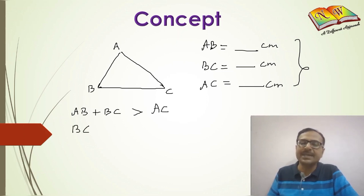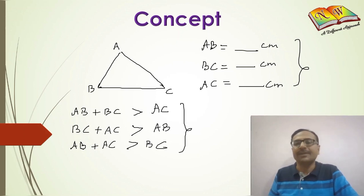If you add BC and AC the sum will be greater than the third side AB, and if you add AB and AC the sum will be greater than the third side BC. So a triangle can only be formed when the sum of any two sides is always greater than the third side, otherwise the construction of the triangle is not possible.